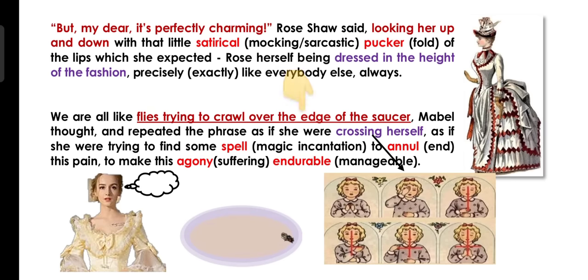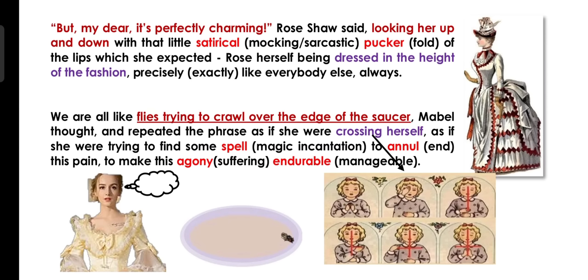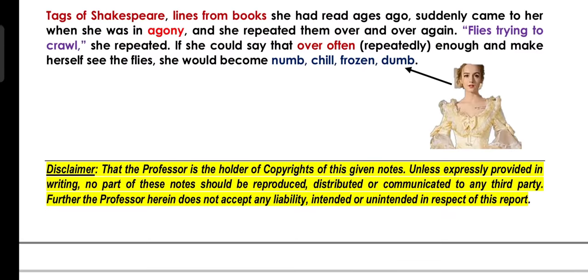Mabel is saying, 'We all are like flies trying to crawl over the edge of the saucer.' Now this sentence is very metaphorical, where Mabel is saying that we all are trying to save our soul. This means that every guest at the party is like a fly trying to figure out how they can go further and further. This phrase keeps repeating again and again in her mind to reduce Mabel's sufferings and pain. Alone at the party, she remembered a Shakespeare line which was repeatedly repeating: flies trying to crawl.